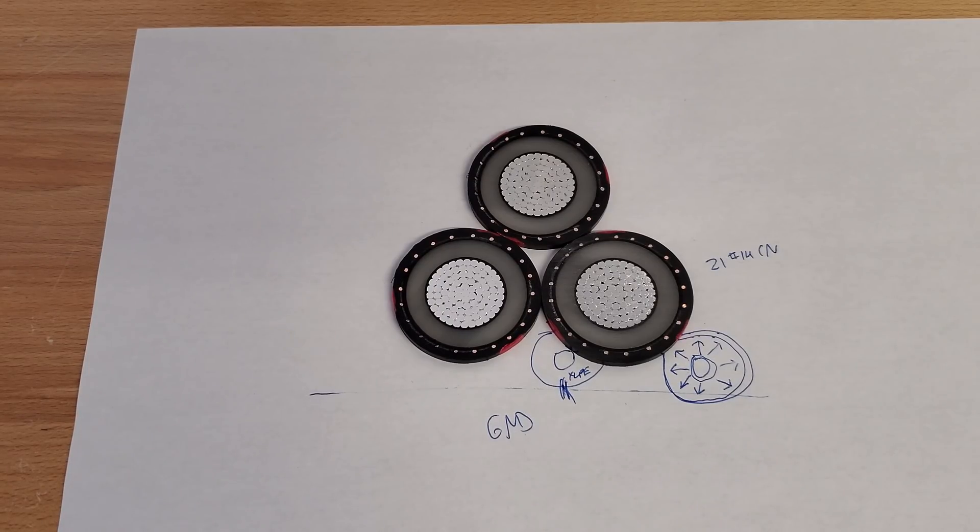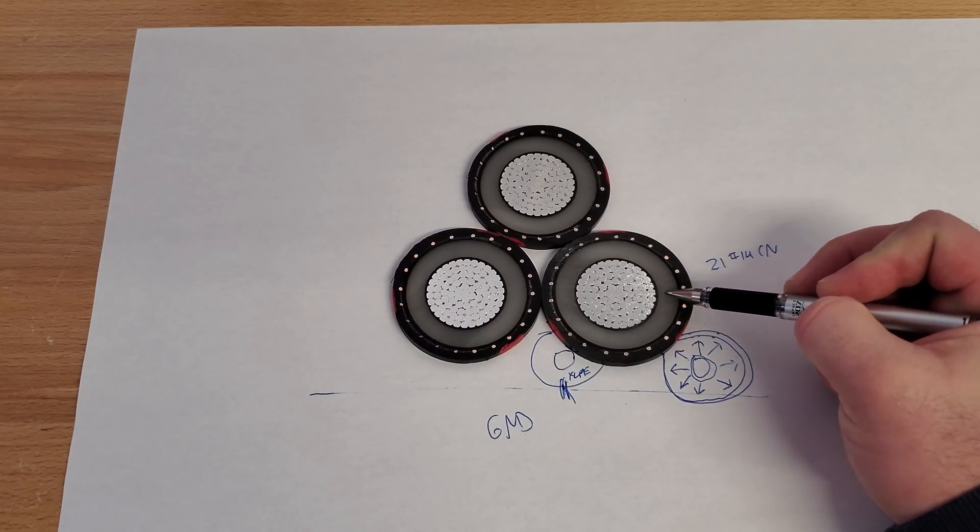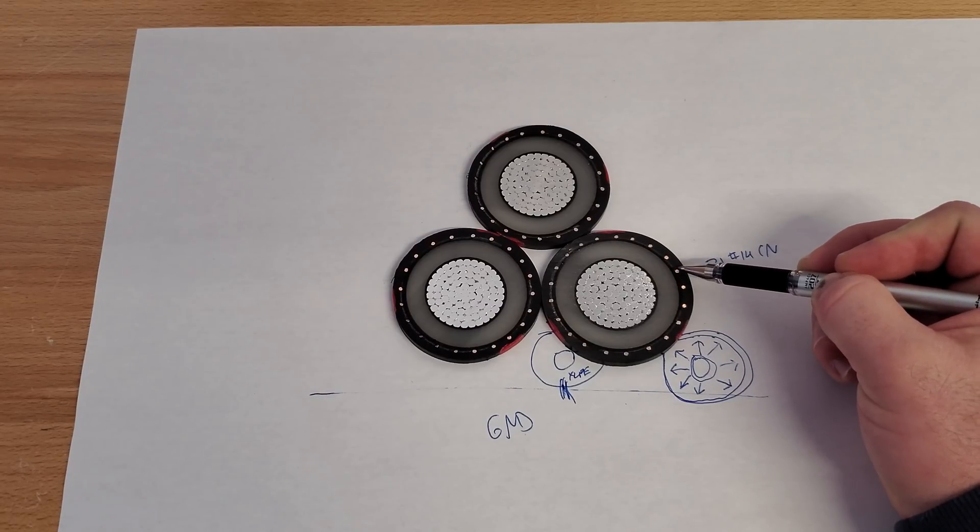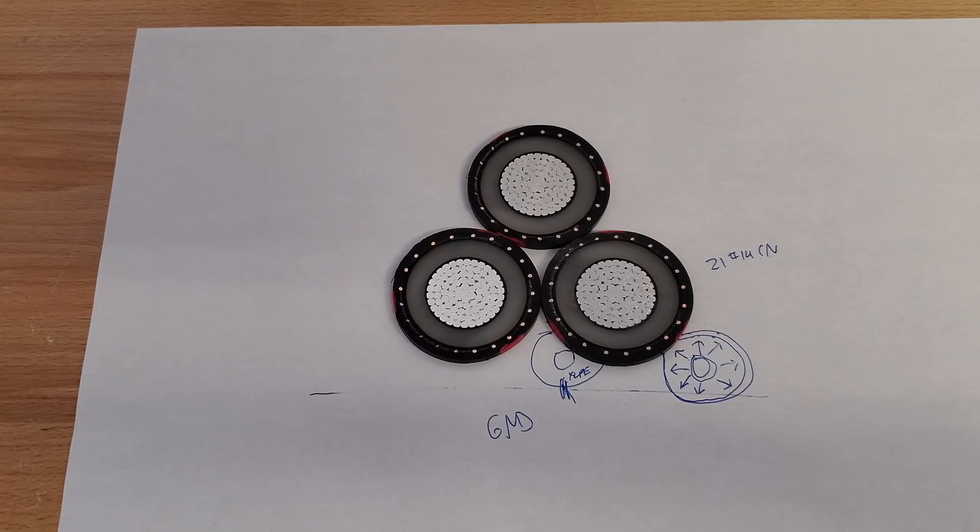I could talk two days straight on this stuff. That's really just high level. Again, your current carrying conductor, your conductor shield, your insulation, your insulation shield, your concentric neutral layer, and your jacket. Thanks guys.